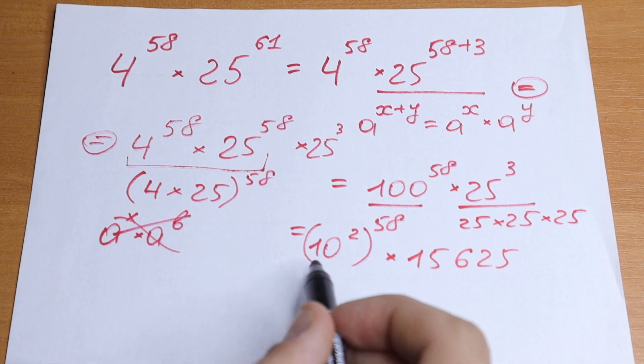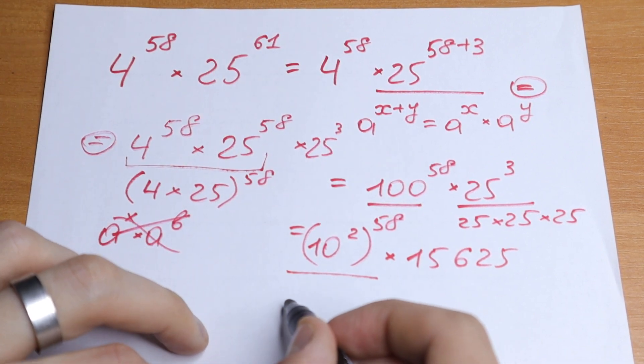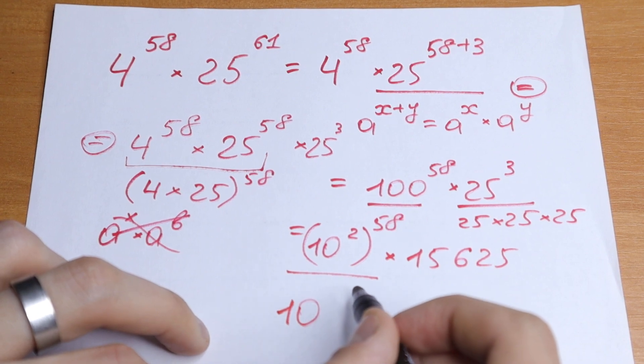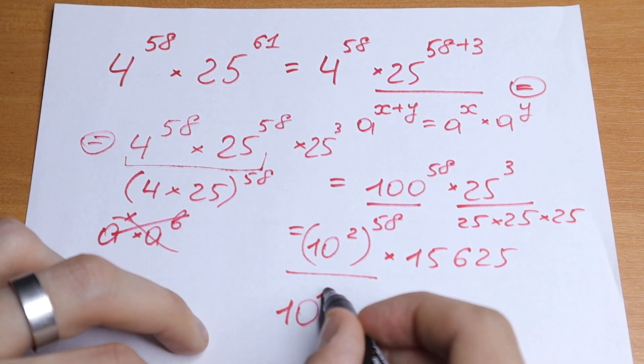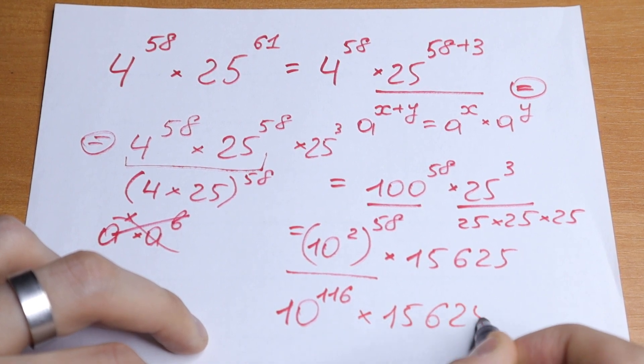And take a look, this is a really good case because right here we need to multiply this 10 by 58. We will have 10 to the power 116 times 15,625.